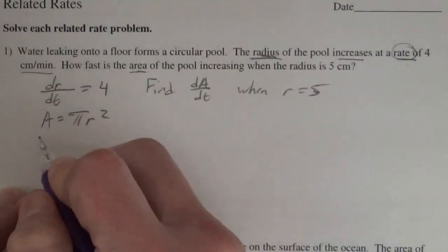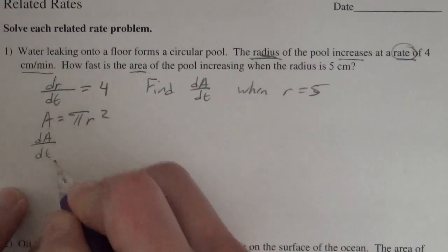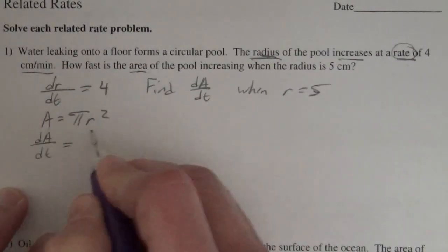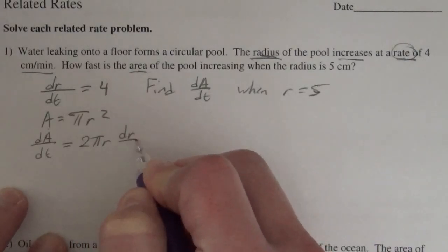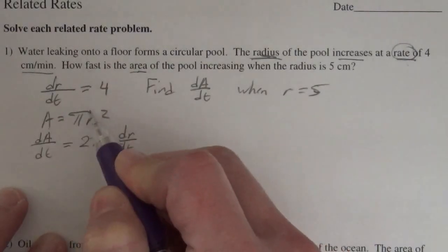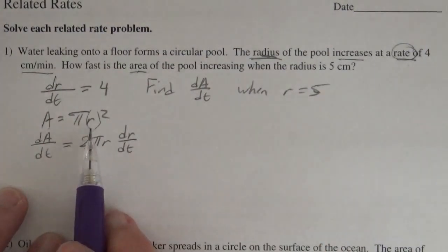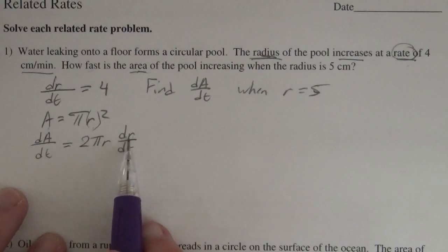The derivative of the area is literally the derivative of the area with respect to time. And then the derivative of this is 2πr, and remember we're taking it with respect to time, so a little bit of implicit differentiation on that variable itself. The derivative of r with respect to time is dr/dt.